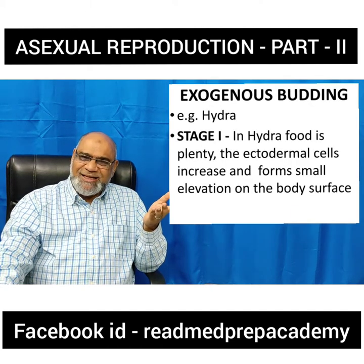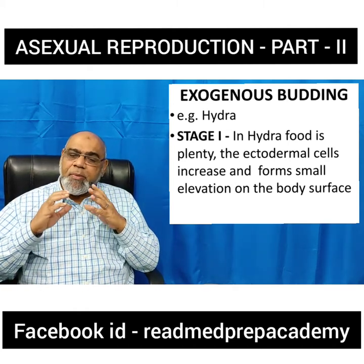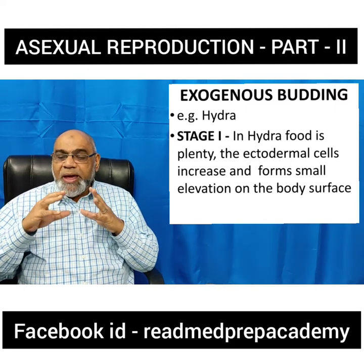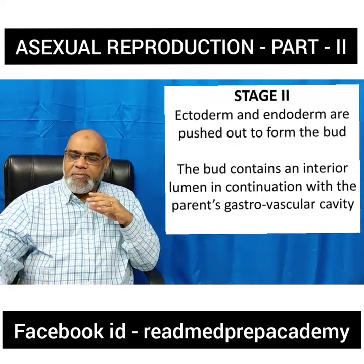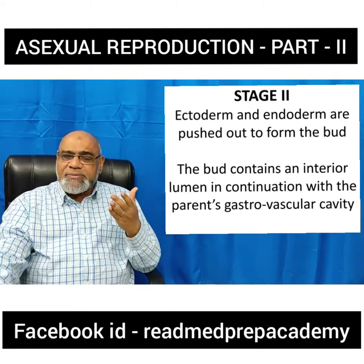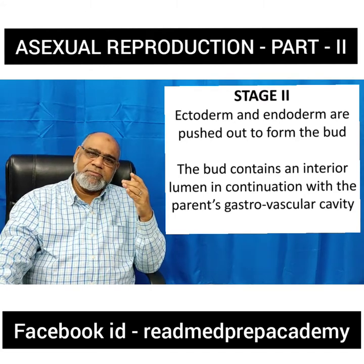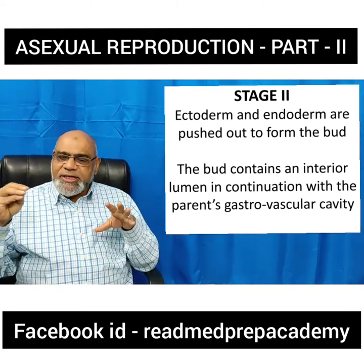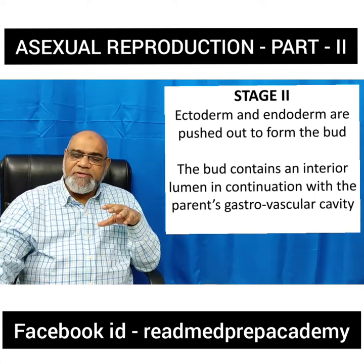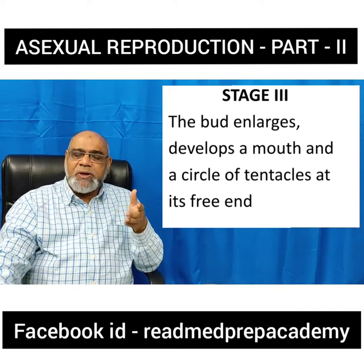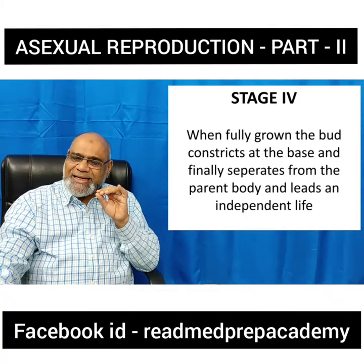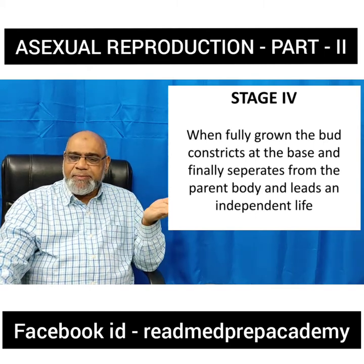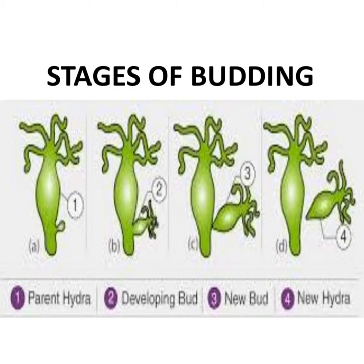In exogenous budding, the first stage involves a small projection or elevation from the body of the animal, where the ectodermal cells project from the body. You can see a small elevation on the body surface. The ectoderm and endoderm are pushed out to form a bud, and the bud develops a cavity inside which is continuous with the parent's gastrovascular cavity. In stage 3, the bud slowly enlarges, develops a mouth and a circle of tentacles around the mouth at its free end. In stage 4, the fully grown bud detaches from the parent body and leads an independent life.